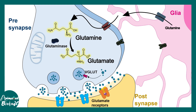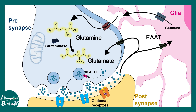Glutamate is ultimately packaged into vesicles with the help of V-glut transporters. When there is an excess amount of glutamate in the synaptic cleft, it can be taken up by the glia with the help of excitatory amino acid transporters. Some excitatory amino acid transporters are also present in the presynapse. Once glutamate is taken up into the astrocytes, it can be converted into glutamine by the enzyme glutamine synthetase.